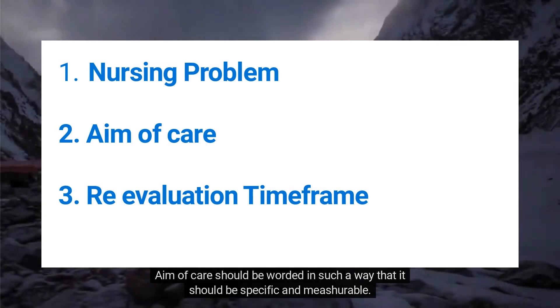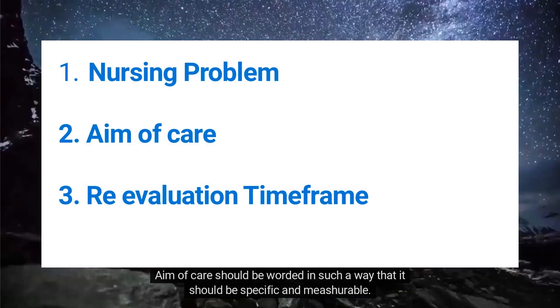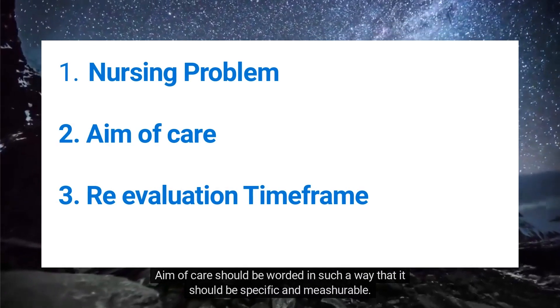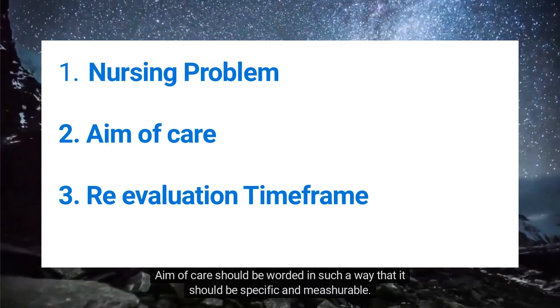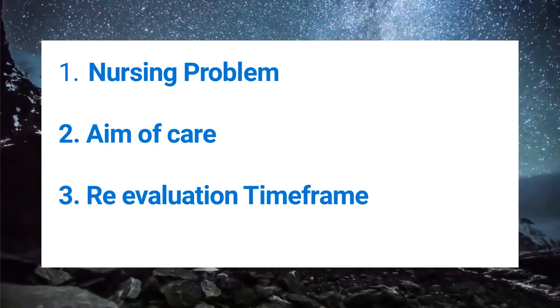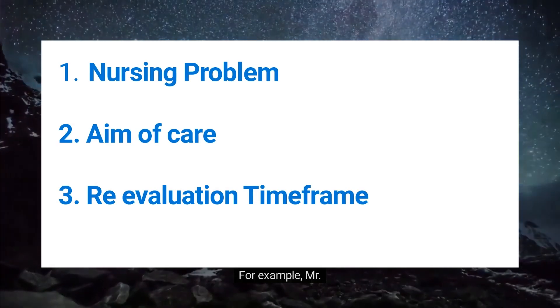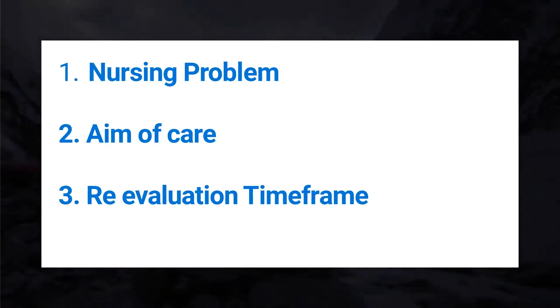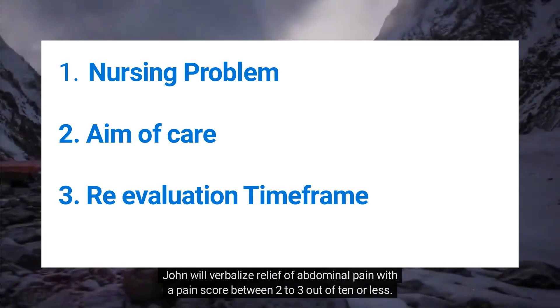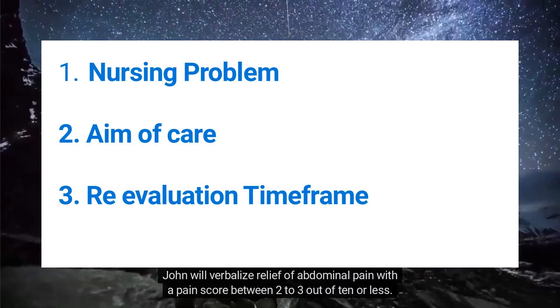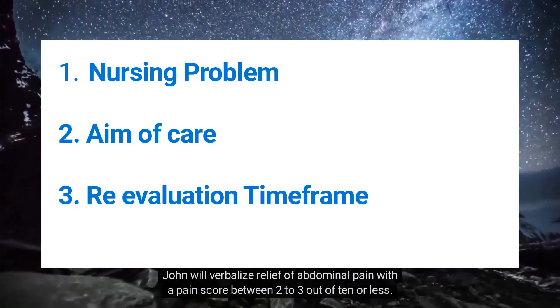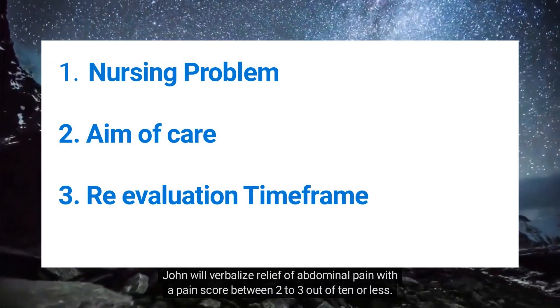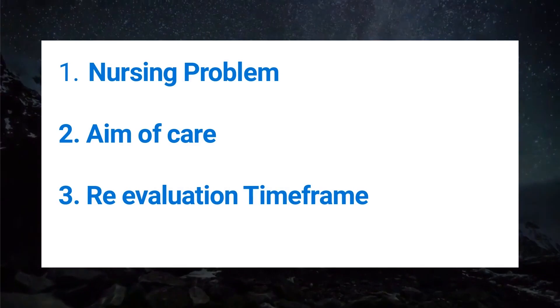The aim of care should be worded in such a way that it is specific and measurable. For example: Mr. John will verbalize relief of abdominal pain with a pain score between 2 to 3 out of 10 or less.